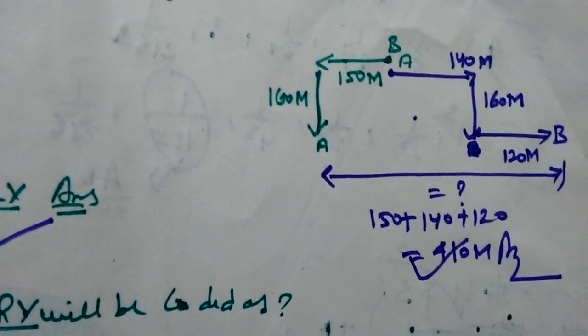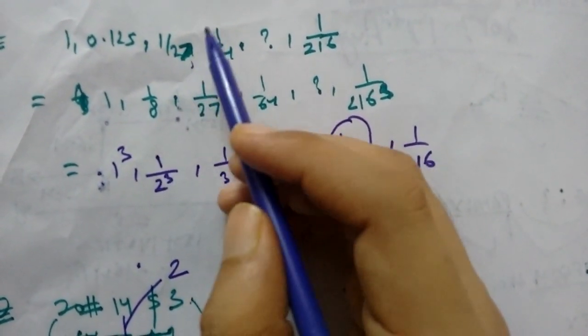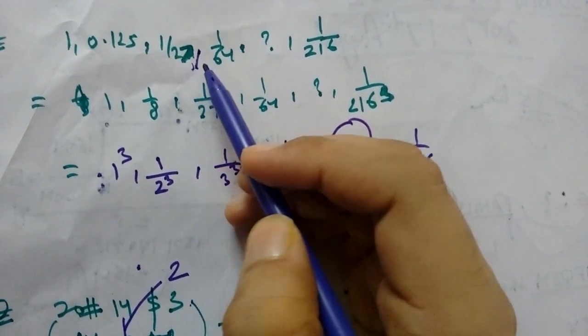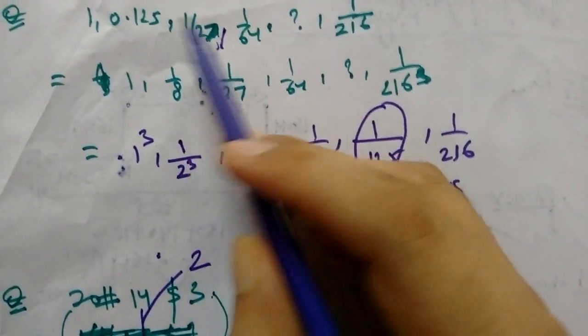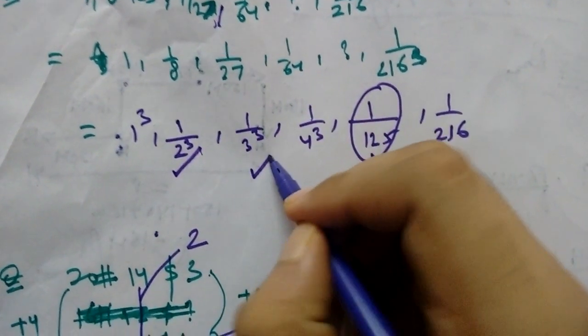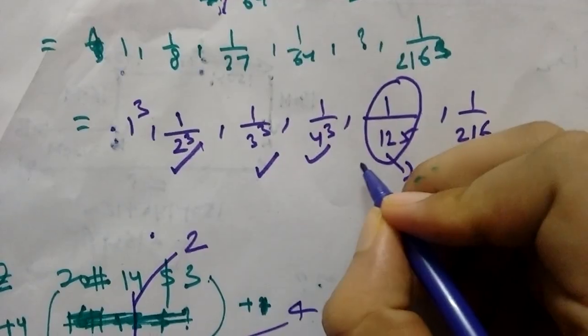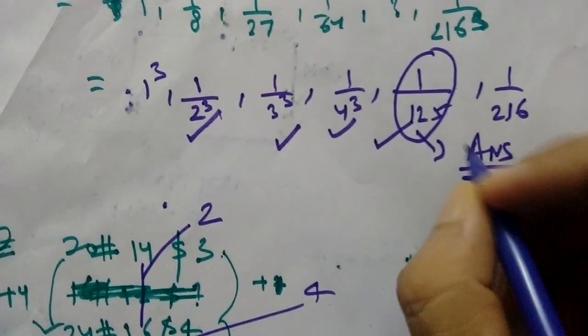1, 0.25, 1 by 27, 1 by 64, 1 by 216. The answer is 0.125, which is 1 by 8.